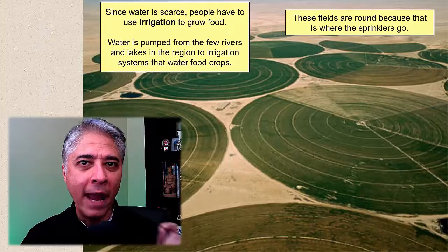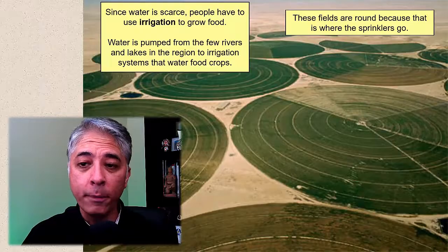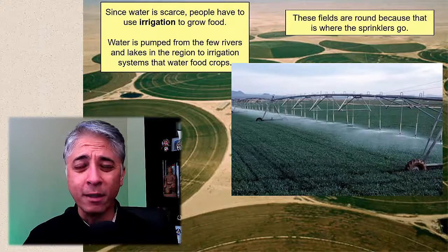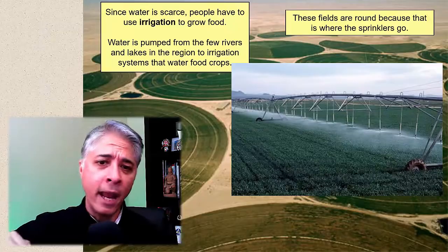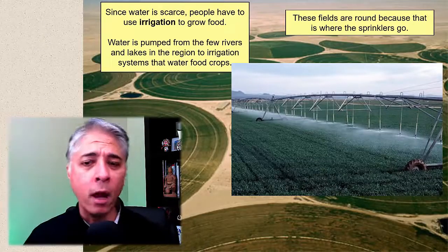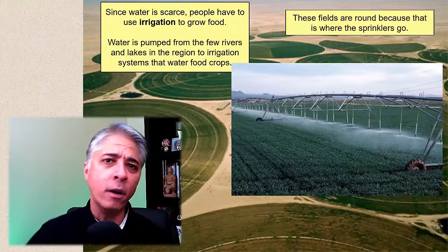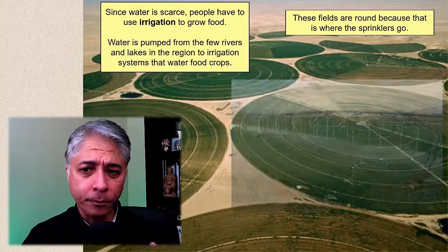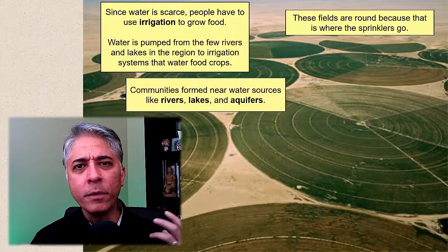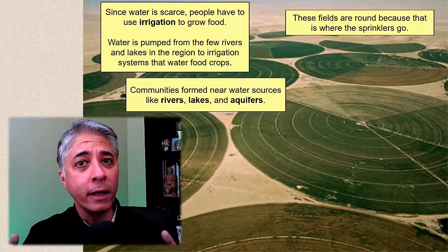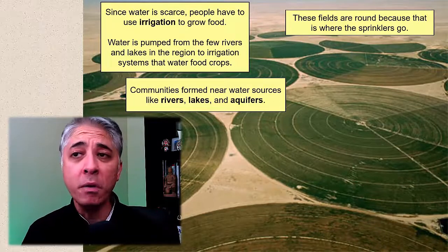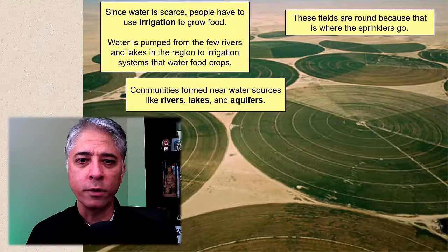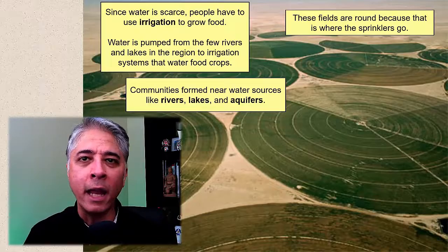The reason that these fields are round is because that's where the sprinklers go in this irrigation system. You'll notice the spaces in between the circles — nothing's growing there at all because there's no water there in the desert. But within the circles, that's where you see green, that's where you see crops able to grow. And this is what one of those irrigation systems looks like — a boom that hangs over the fields and spins around, with sprinklers pivoting over the central location in the middle of each circle.